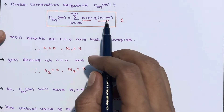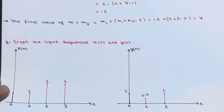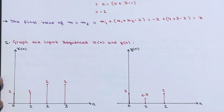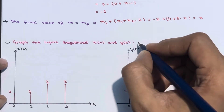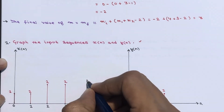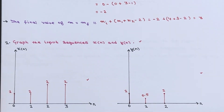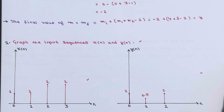Now let's understand how to achieve this graphically. In the first step, graph the input sequences x[n] and y[n]. In the plot of x[n] versus n, at n = 0 value is 1, then 1, 2, 2. In the plot of y[n] versus n, at n = 0 value is 1, at n = 1 value is 0.5, and at n = 2 value is 1.